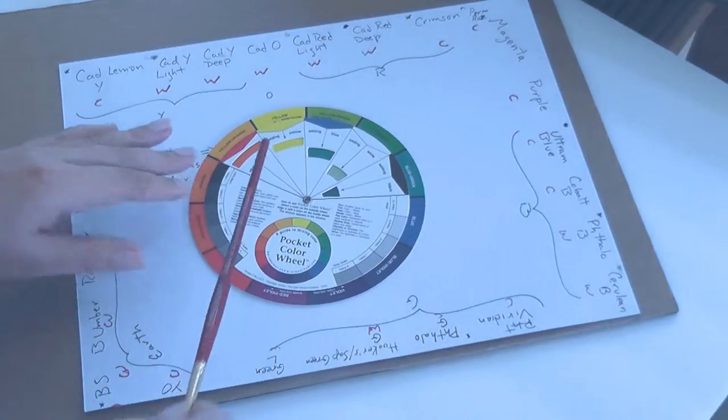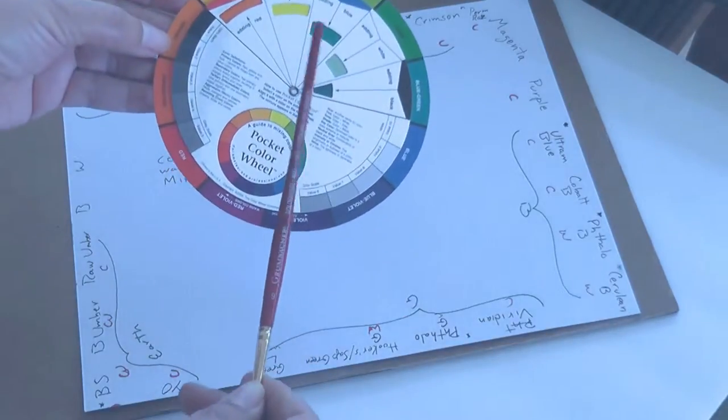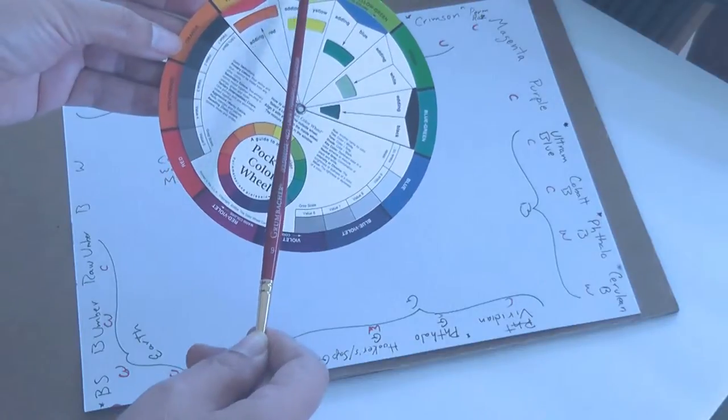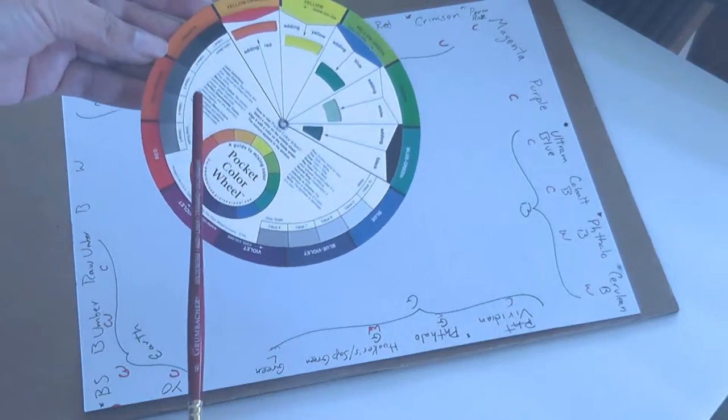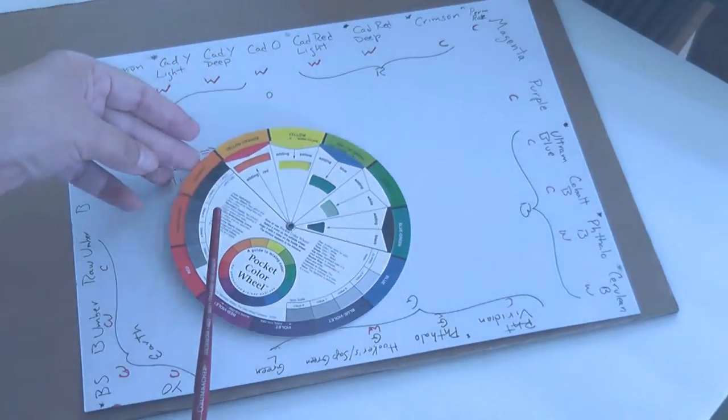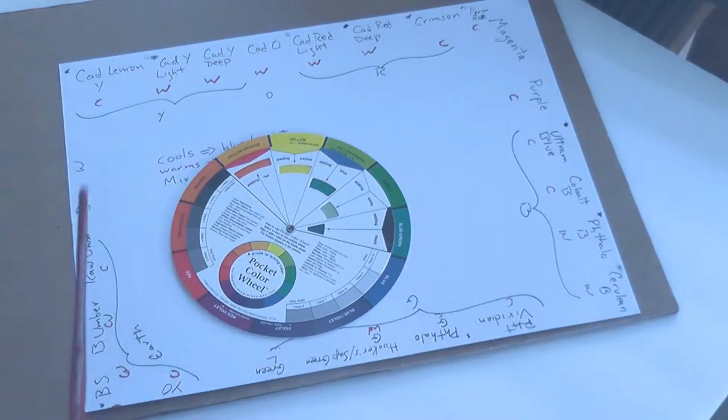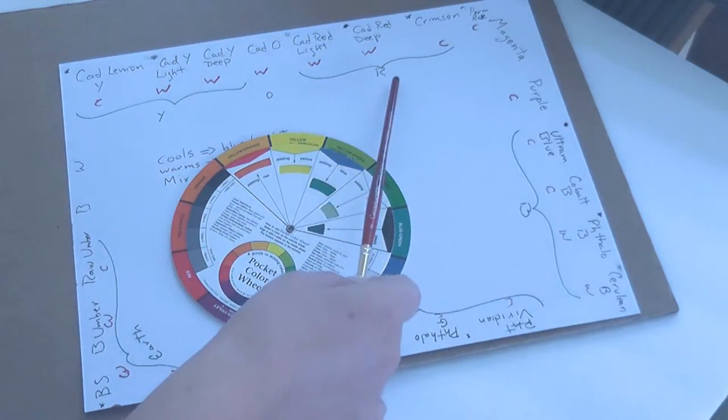I start with yellow. As you can see, the color wheel has yellow, then yellow orange, orange, red orange, and red.